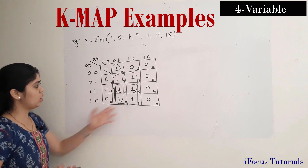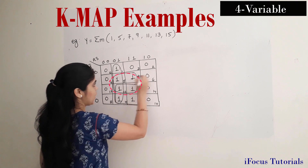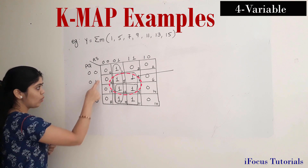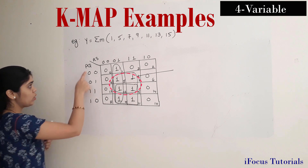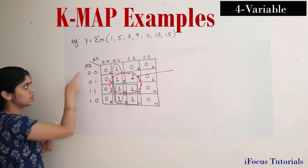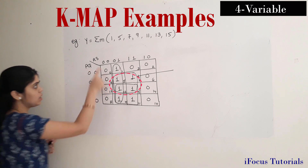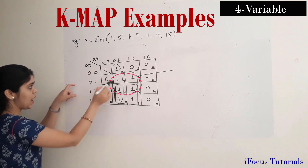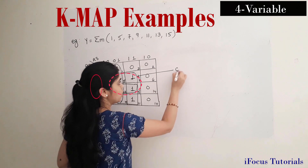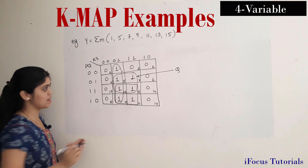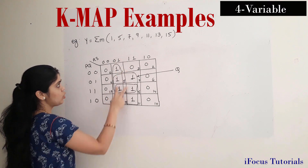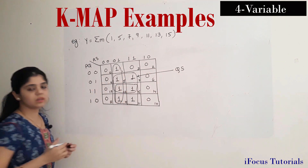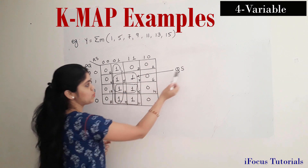Now we will write the expression for all these quads. Starting with the center quad: observing the rows, the left side numbers represent P and the right side numbers represent Q. Comparing both rows, the common term is Q, and Q represents a 1, so I write Q directly. Observing the columns, the right side value 1 is common, and 1 is represented by S. So the expression for this quad is QS.